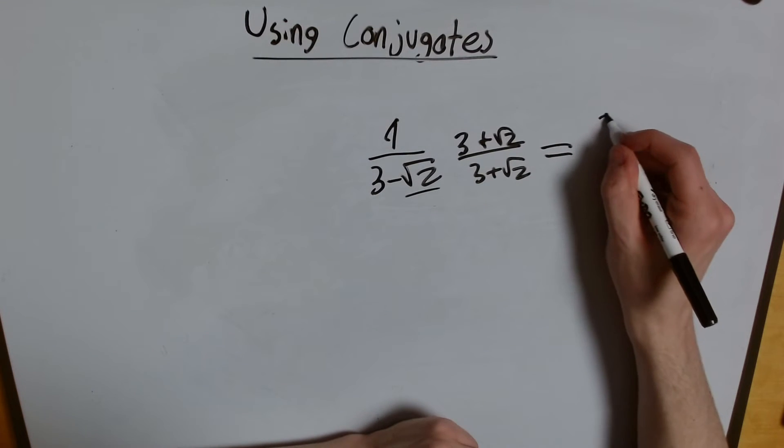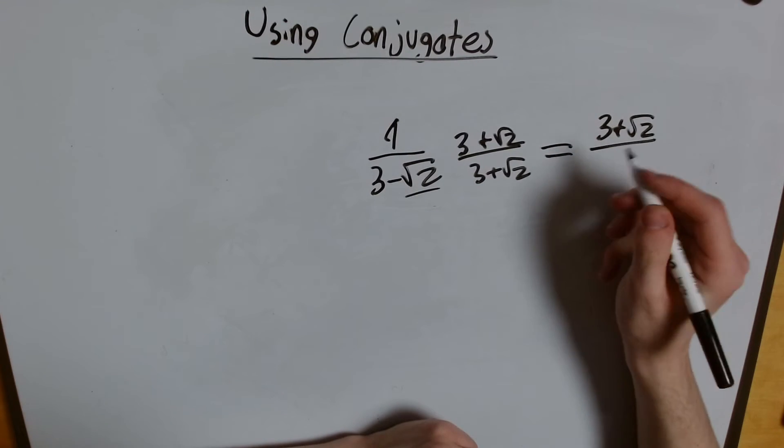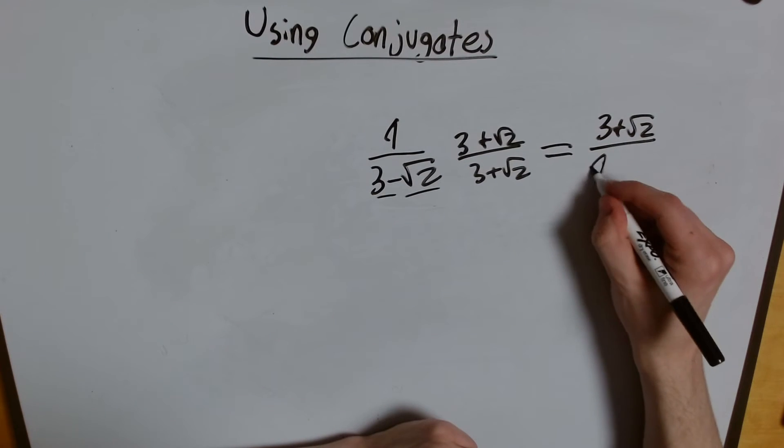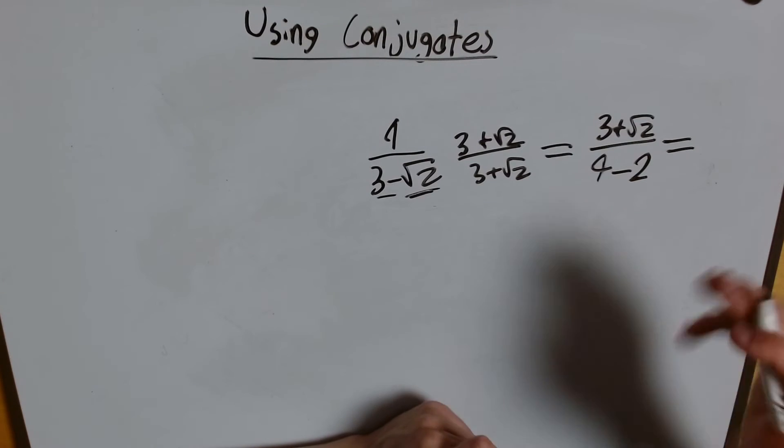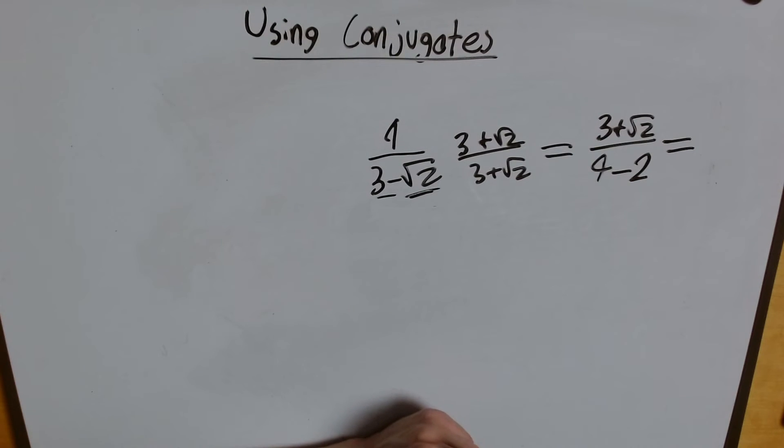Because we'll be left with this on the top, and we'll be left with the square of this, which is 9, minus the square of this, which is just 2. So we're left with a rational number in our denominator of our fraction.